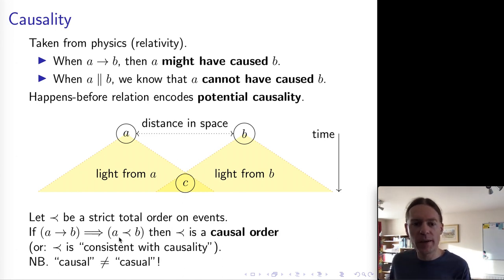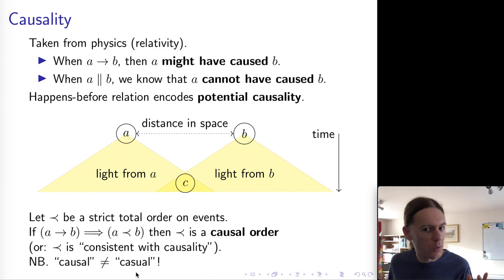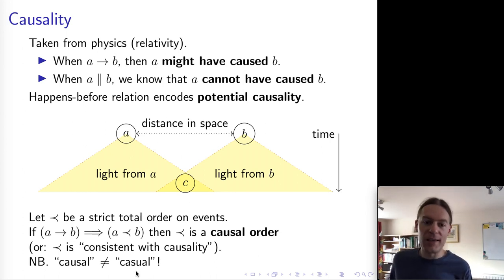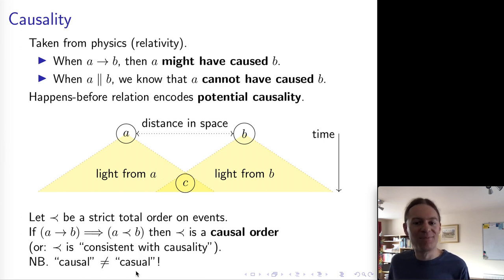One last thing: it's very easy to confuse the word 'causal' with 'casual' because just two letters are swapped. I keep having to double-check it myself. If you're writing about distributed systems, you probably mean 'causal,' not 'casual.' See you next time.